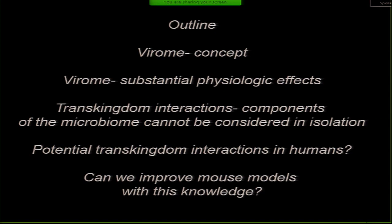By outline, I'm going to talk about the virome as a concept and try to convince you that this set of viruses can have very substantial physiologic effects. Then, thinking about one component of the microbiome, it turns out these components interact with other components in biologically meaningful ways, and the silos of expertise — virus people, protist people, bacterial people — actually limit how we understand biology. I'm calling those trans-kingdom interactions. I'll close with using this knowledge to perhaps improve mouse models.